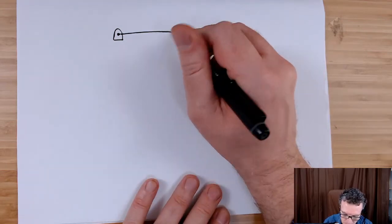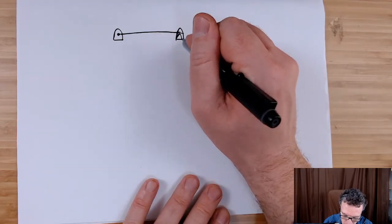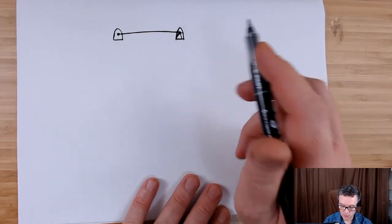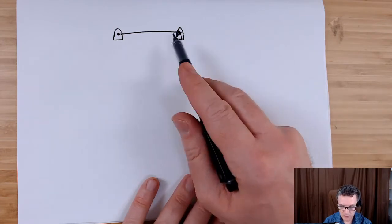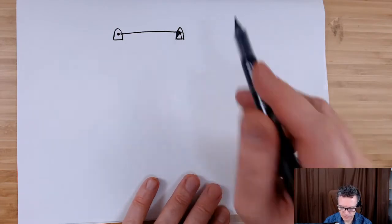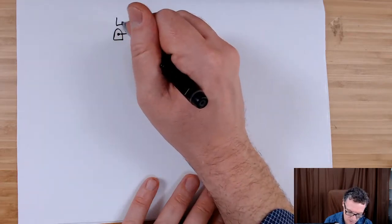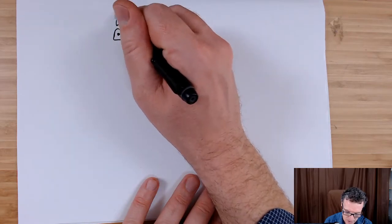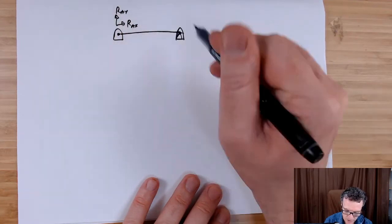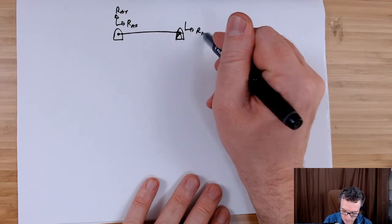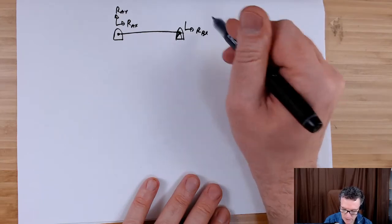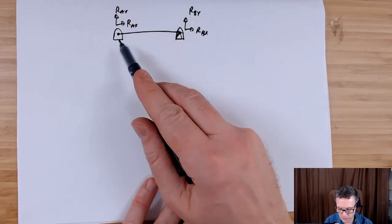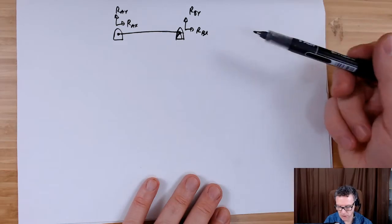If I change this pivot to be another hinge, which is what we normally see for a bridge or whatever, we cannot mathematically solve this. We're creating too many unknowns. So if that's my Rax, Ray, Rbx, and Rby, so I can solve forces in the x direction.